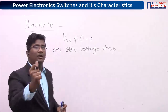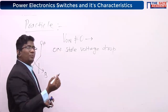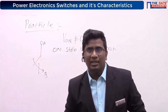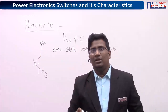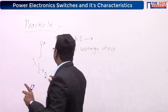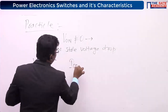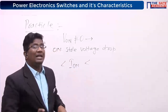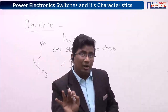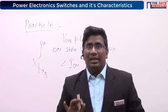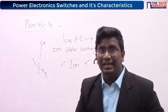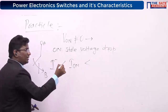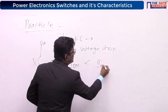This is the on-state voltage drop, or on-state conduction drop. Now, previously your ideal switch was carrying how much current? An ideal switch carries an infinite amount of current. But for a practical switch, is it possible to allow that infinity current? No. So definitely there is some maximum limit.